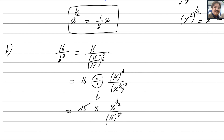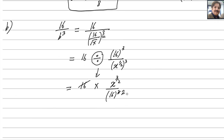The 16 in the numerator cancels with one factor of 16 in 16 cubed, leaving 16 squared in the denominator. Since 16 squared is 256, the answer for the second part is (1/256)x^(3/2). Second part is done.